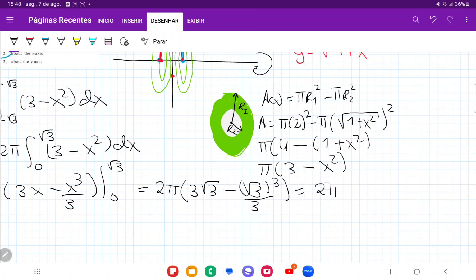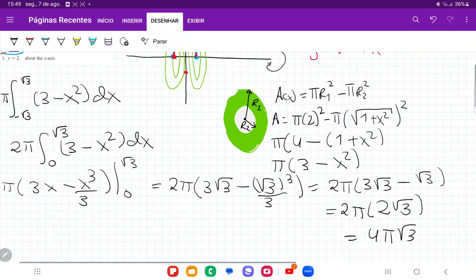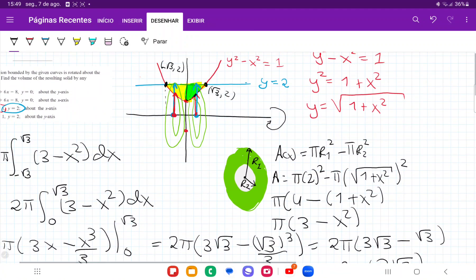3 root 3 and then minus root 3 to the power of 3 over 3, which is equal to, this is going to be 2 pi times 3 root 3. And now when I put root 3 cubed divided by 3, that is just going to give me minus root 3. And so this is going to give me 2 pi, 3 root 3 minus root 3 is just going to give me 2 root 3. And therefore, the answer is going to be 4 pi times root 3. And so that's my volume when I take the area between these two curves and I rotate it about the x-axis.